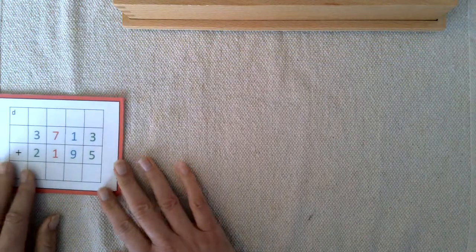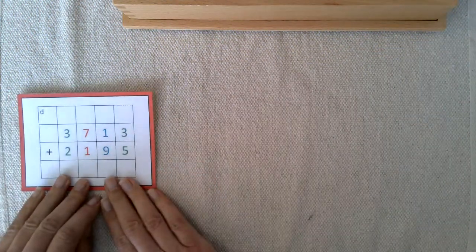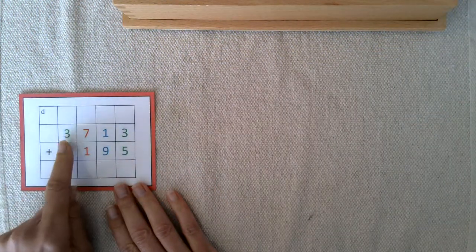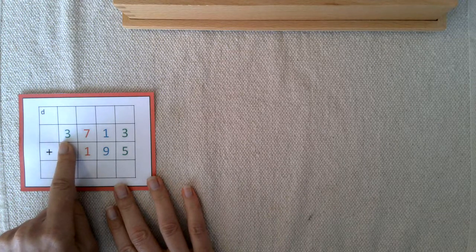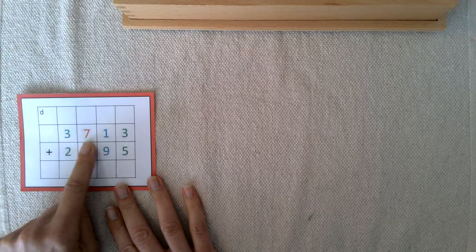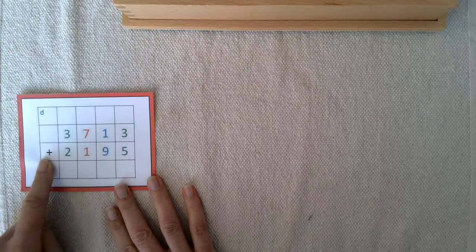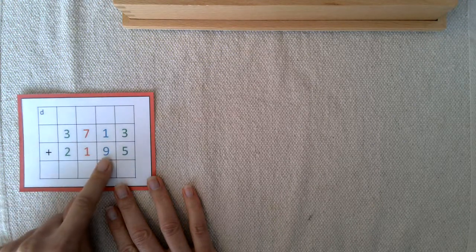Okay, so I have a card here with an addition problem on it. The first step would be to read that or have the student read it: 3,713 plus 2,195.